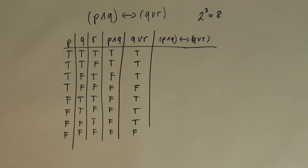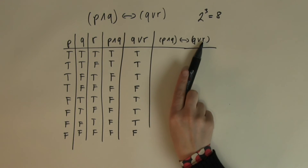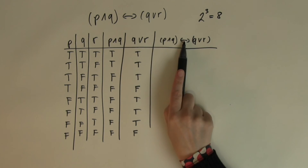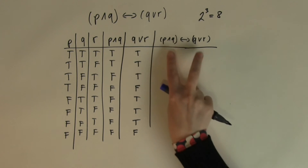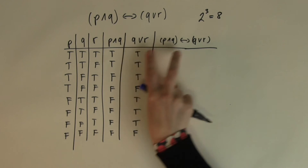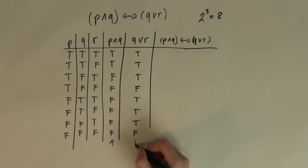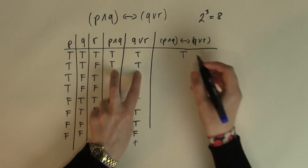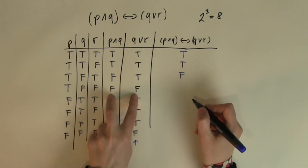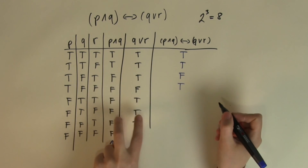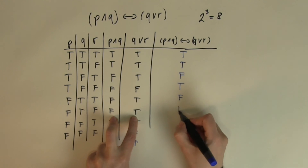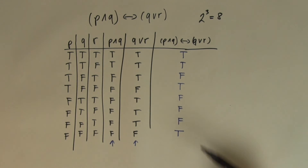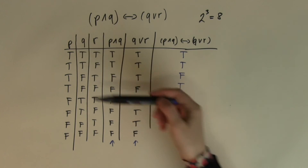Next, I need to combine the p∧q and q∨r outputs using the if-and-only-if. The if-and-only-if is true only if the two input values are exactly the same — either both true or both false. Looking at the two columns: true and true is the same, so true; same again, true; they are different, so false; false and false is still the same, so true; different, false; different, false; different, false; same, true. So this is the final output for all the different combinations of p, q, and r values.